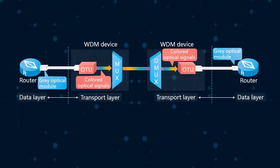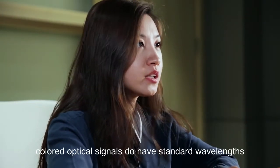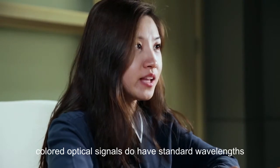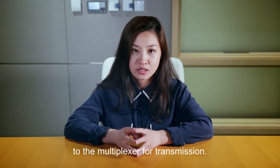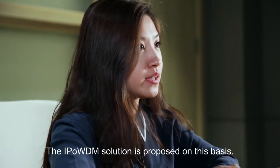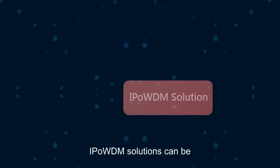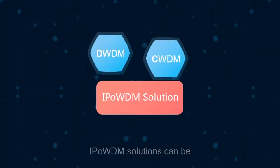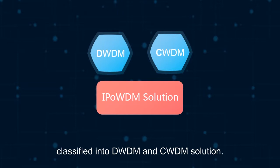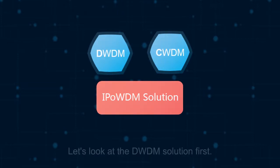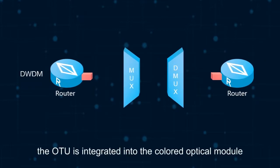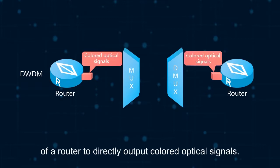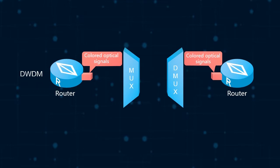We can see that colored optical signals do have standard wavelengths and therefore can be directly output to the multiplexer for transmission. The IP over WDM solution is proposed on this basis. IP over WDM solutions can be classified into DWDM and CWDM solutions. In the DWDM solution, the OTU is integrated into the colored optical module of a router to directly output colored optical signals.